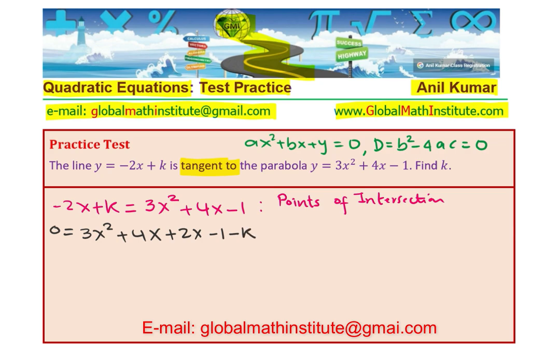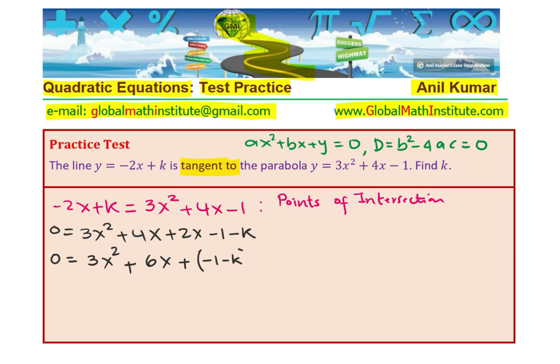So in this equation, when you simplify it, you get 3x² + 6x (4 plus 2 is 6), and then we can write minus 1 and then we can write this as plus and within brackets minus 1 minus k, so that is the constant.